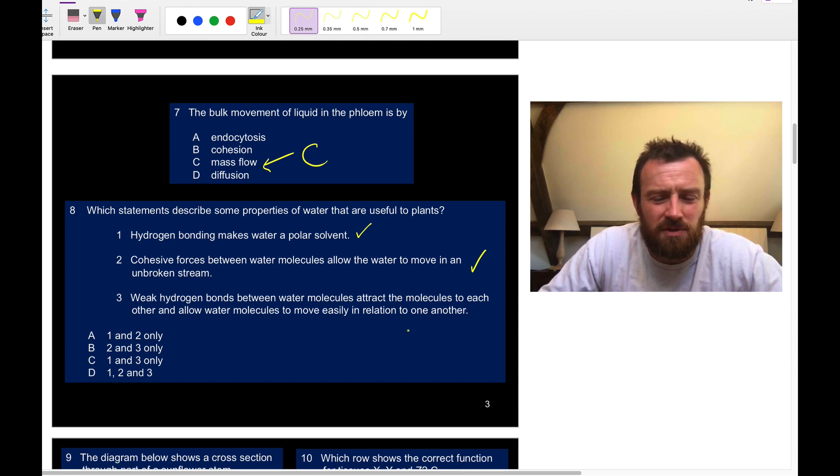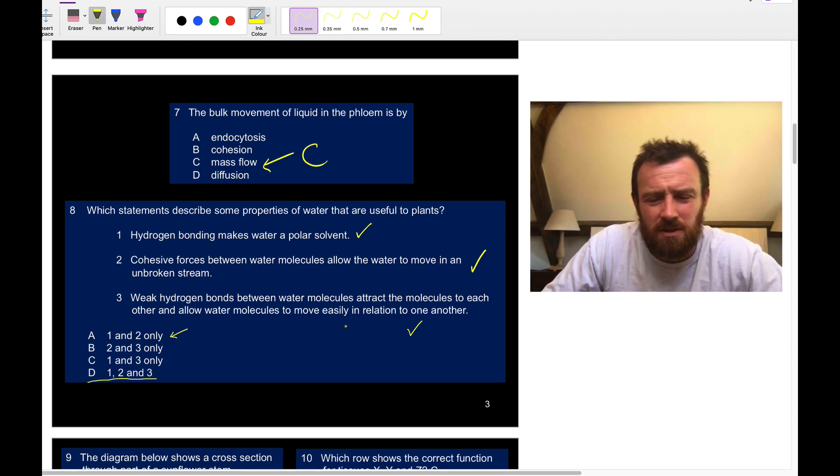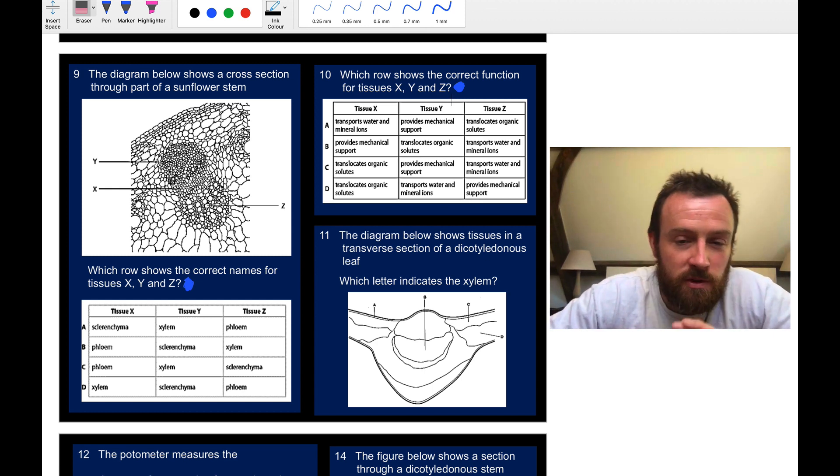Weak hydrogen bonds between water molecules attract molecules to each other and allow water molecules to move easily in relation to another, so that is about viscosity, the fact that water can flow. Now I would have almost said D, but the examiner who created this says A. I kind of disagree with that. I think that the fact that water can flow easily is beneficial, although I can see what they're saying. Maybe water doesn't need to flow rapidly around the plant, it's quite slow flow. So anyway, they're saying A, so let's go with A.